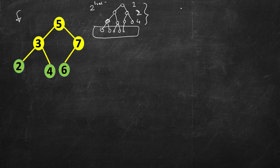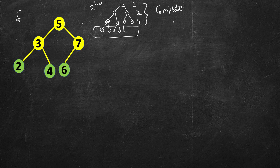Counting the number of nodes — any simple traversal would work, but here we have to optimize our solution to take advantage of the completeness of the tree. Even if it's not a complete binary tree, a traversal gives you the count. But since it is complete, we can exploit this condition using the logic that at level l there will be 2 raised to the power l nodes.